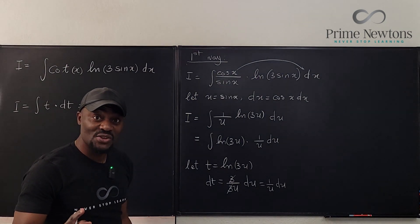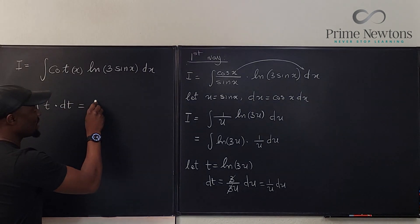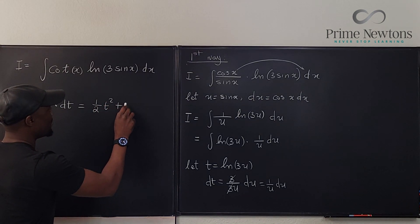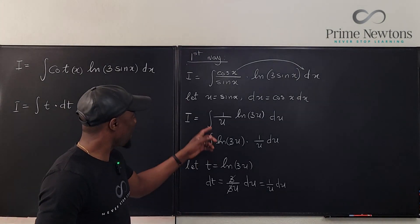This is just the integration—our answer is basically the integral of t dt, which is half t squared plus c. Now I just have to go back and replace.